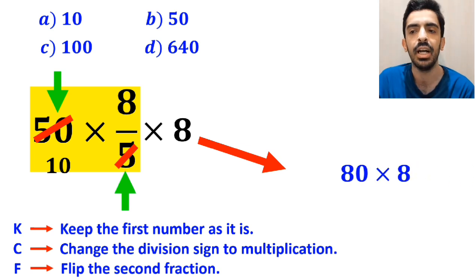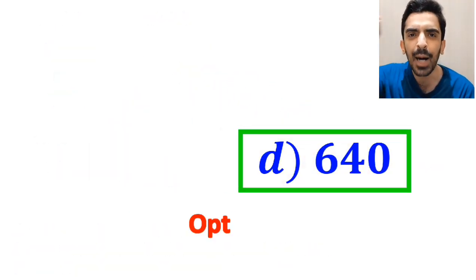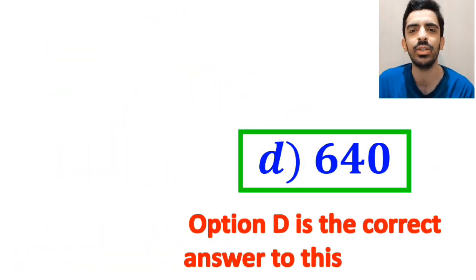As you can see on the screen, the number 50 simplifies with the 5 in the denominator and instead of this expression we can write 80 times 8, which ultimately gives us the answer 640. Therefore, option D is the correct answer to this question.